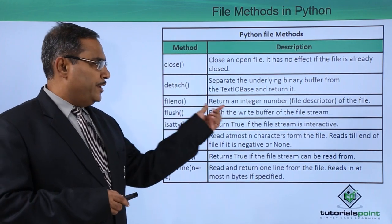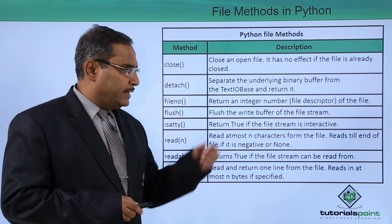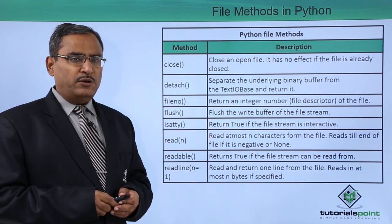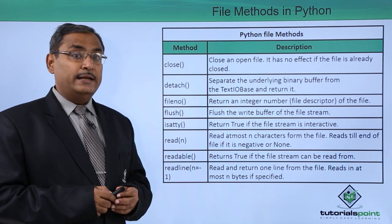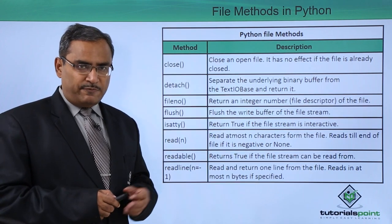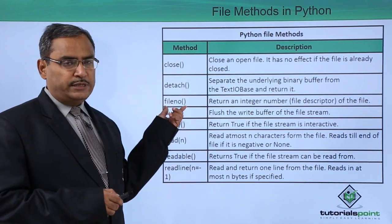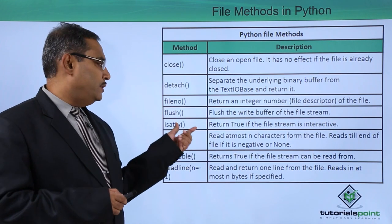Next one is fileno - return an integer number, the file descriptor of the file. Each and every file when it will get opened then it will be attached with some file descriptor number. That number will be returned using this method fileno, the file number.